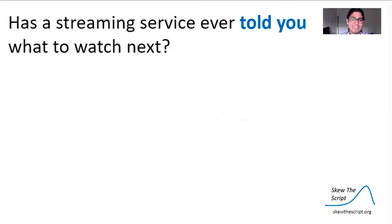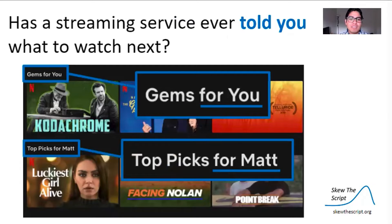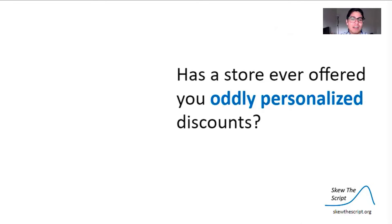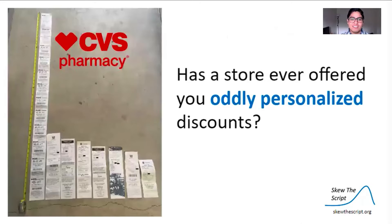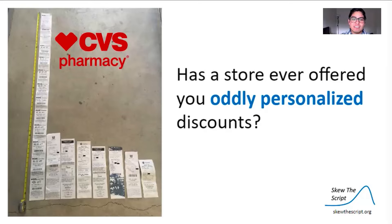Or how about this: has a streaming service ever told you what to watch next? It's kind of spooky, but maybe not surprising since they've watched me and I watch everything. Or has a store ever offered you oddly personalized discounts? If you've ever been to CVS, you know how long these receipts can be. And they're always full of ads for things the company thinks you'll buy next. For me, it's usually candy and toilet paper.